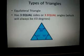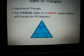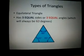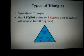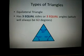There are several different types of triangles. The first type is known as an equilateral triangle. It has three equal sides or three equal angles, which will always be 60 degrees because all three angles add up to be 180 degrees within a triangle.